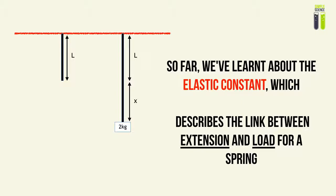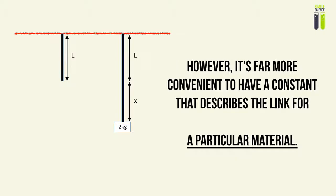And this elastic constant describes the link between extension and the load for a spring. Just a spring, a particular spring, and not any other spring. So therefore, it's quite inconvenient in that we must find a constant that is able to describe a material. Describe how the extension and the load varies generally for a material. So we must find a convenient way to have this constant to describe the link for a particular material, which the elastic constant does not do.